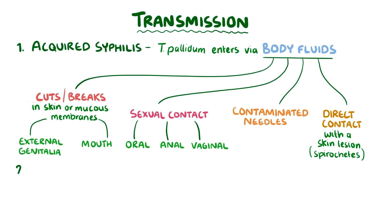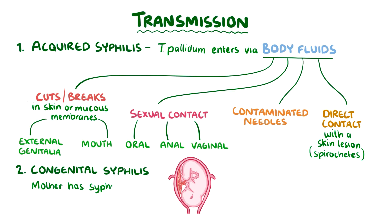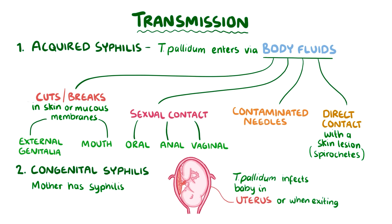The second way is called congenital syphilis, and that's when a pregnant person has syphilis and Treponema pallidum infects a baby either in the uterus or while the baby exits through the vagina at birth.